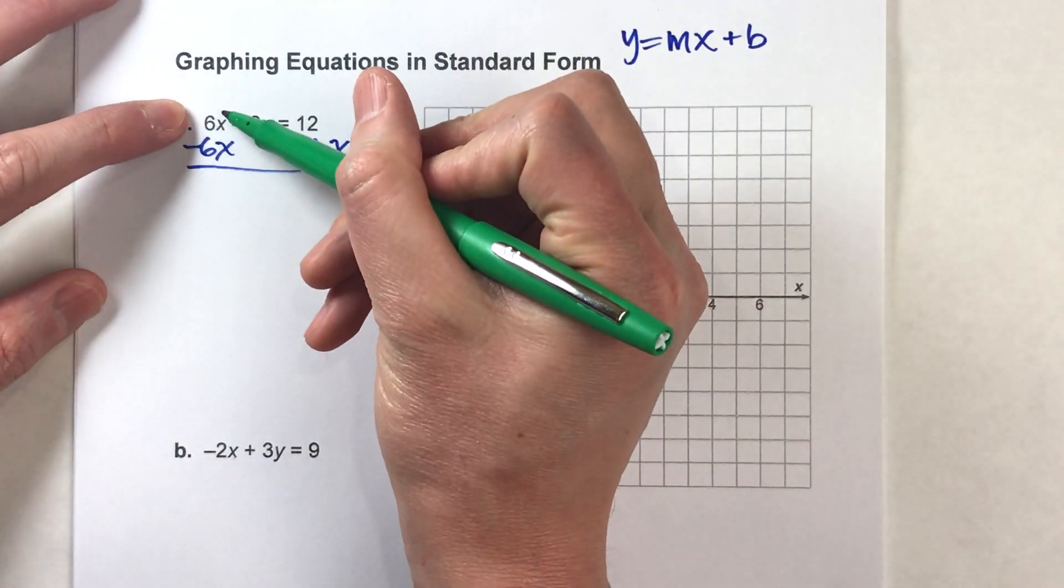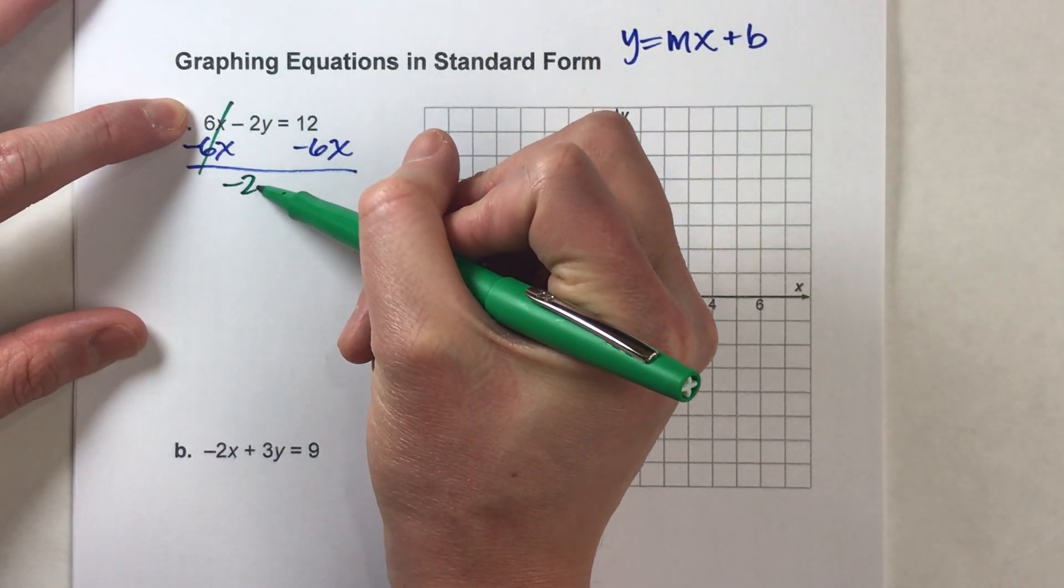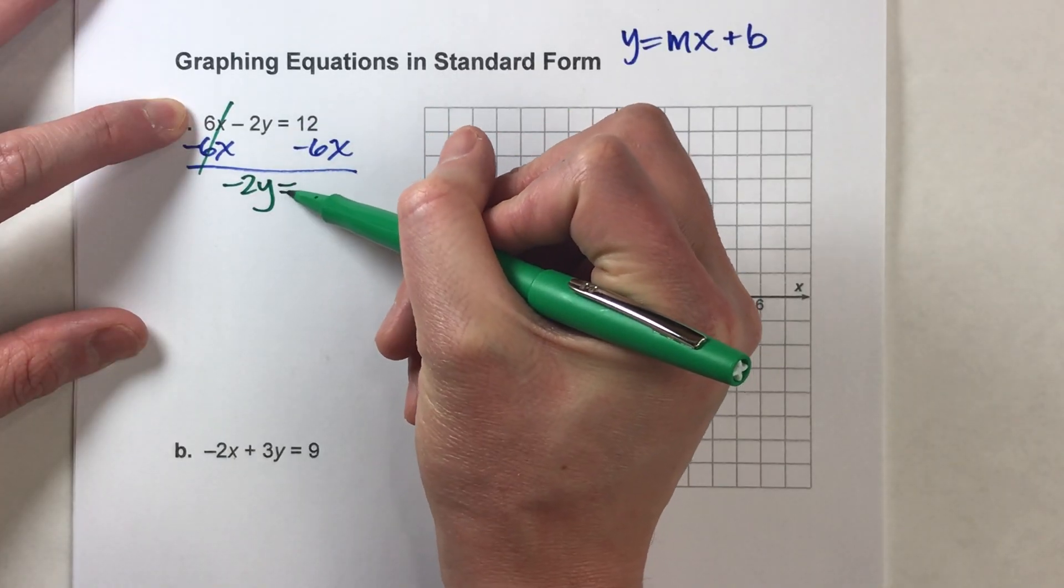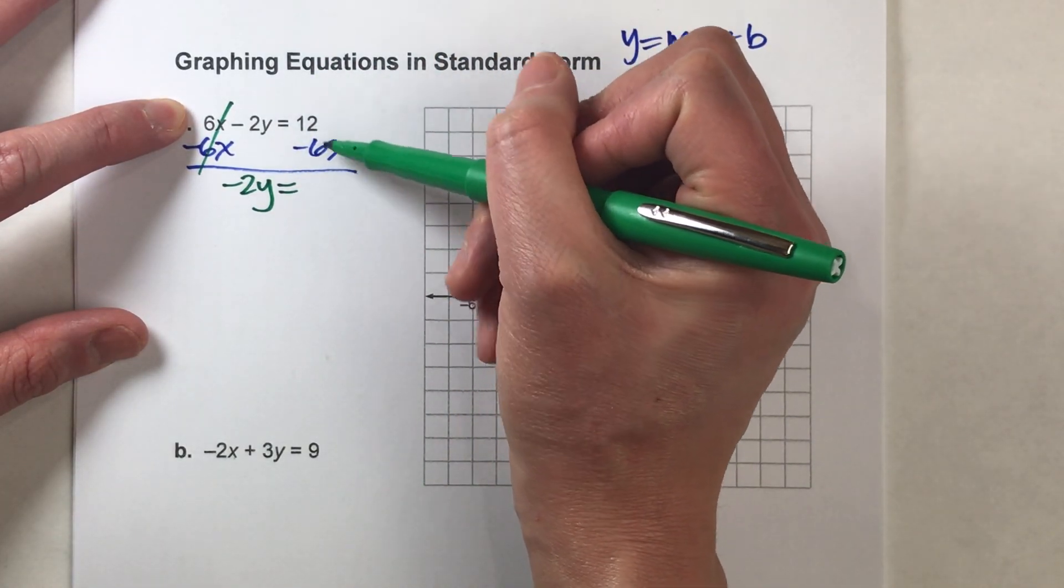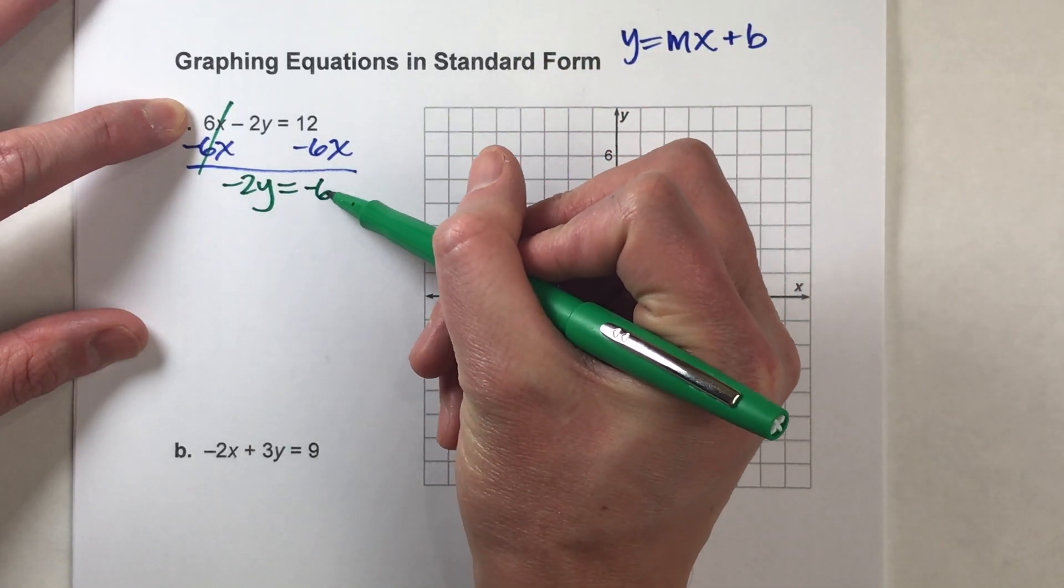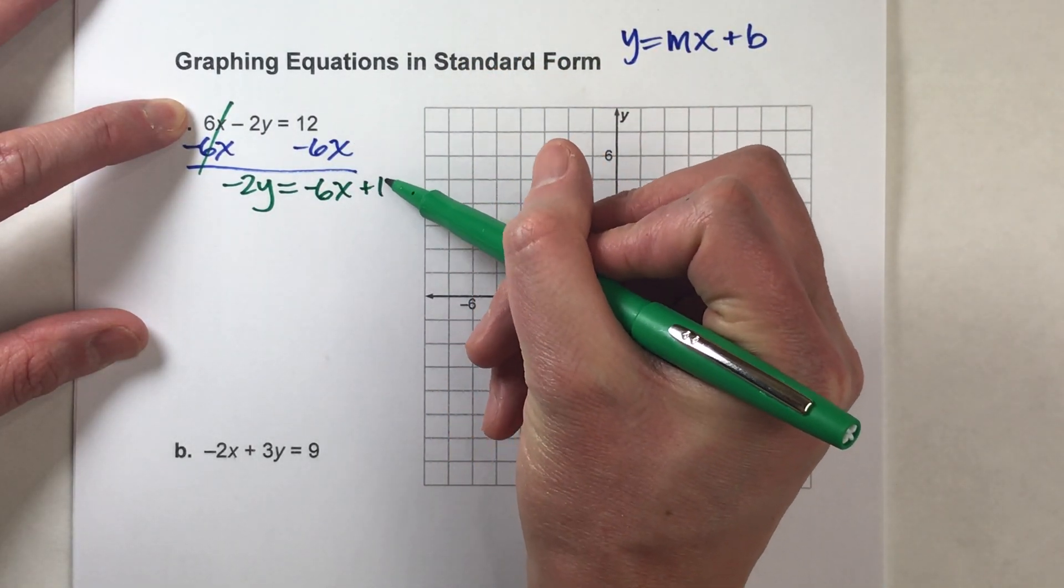Alright, the 6x's undo each other, but the negative 2y drops down, the equals drops down, and notice I can't subtract 6x from 12, so I'm going to keep these two things separate. I'm going to keep the negative 6x here and then the positive 12 right here.